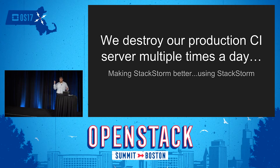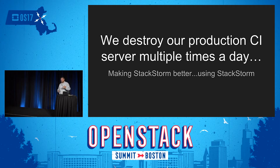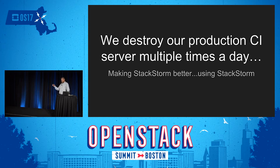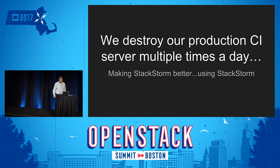My name is Matthew Stone. I am a senior software engineer for the StackStorm project — we're an open-source event-driven automation platform. This talk is going to cover basically a story, and like all good stories there is a villain and a hero. The villain is software release, and the hero is a little bit more like the Avengers — there are many different tools that come together to solve our release problems.